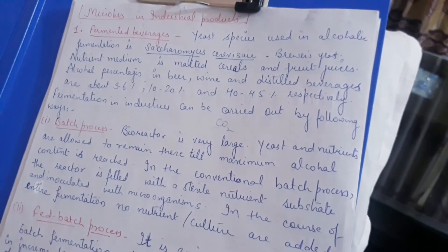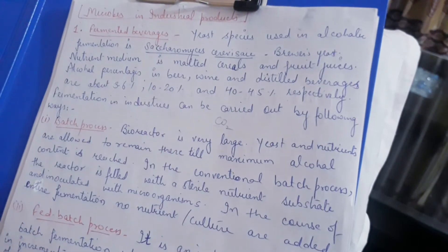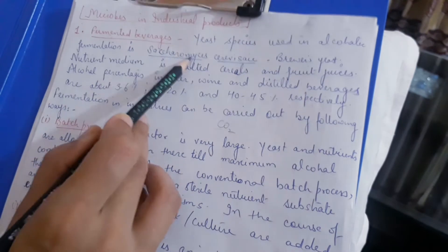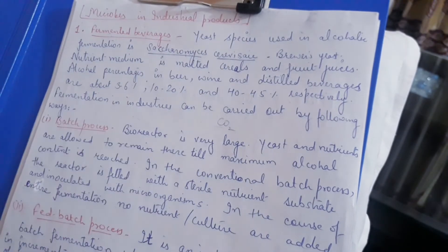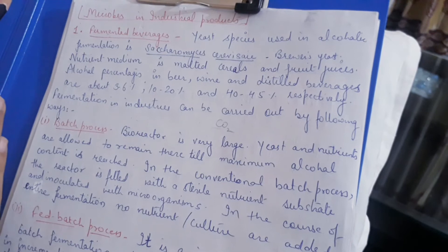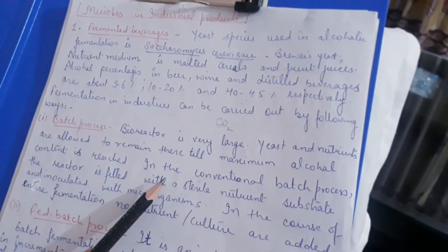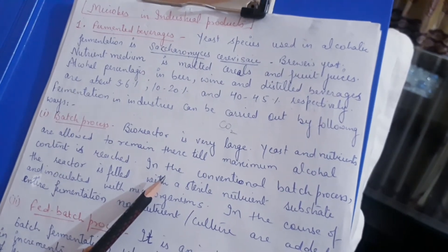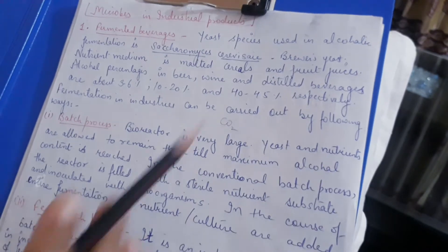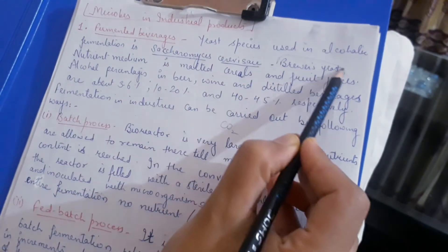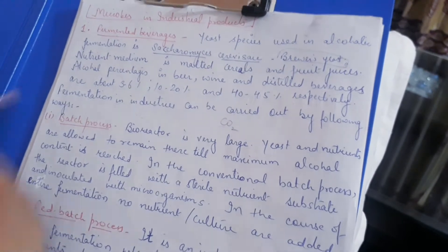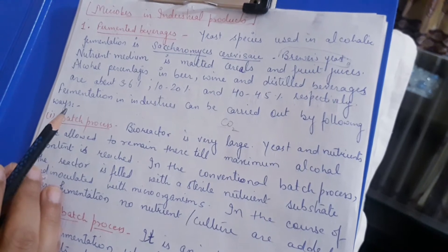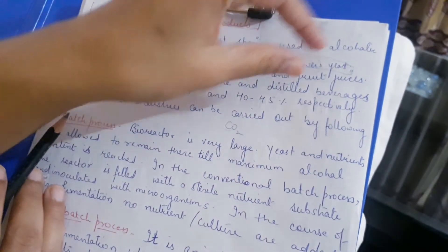For fermented beverages, the yeast used is Saccharomyces cerevisiae. The same yeast can also be used for the production of bread — so we call it baker's yeast. But when it is used for alcohol production, we call it brewer's yeast.